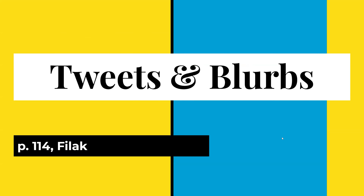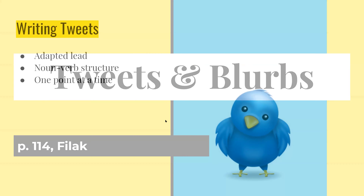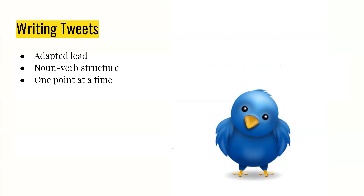Now for part two: let's talk about tweets and blurbs. Whenever you're writing online, a lot of what people write is going to be shorter. When you're advertising your longer blog posts, it's generally going to be about the same as writing tweets. When you write tweets, you're essentially adapting your lead, making it very short and understandable so people will want to click on it.